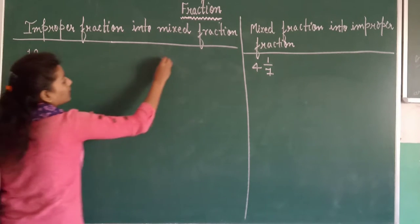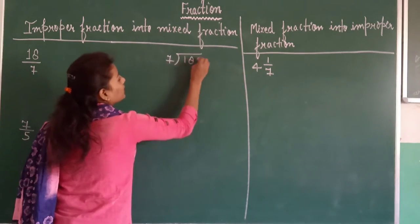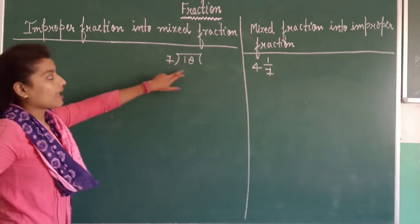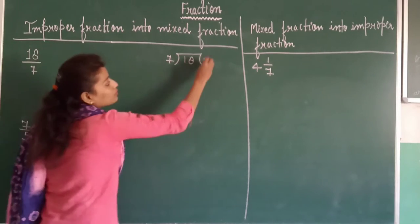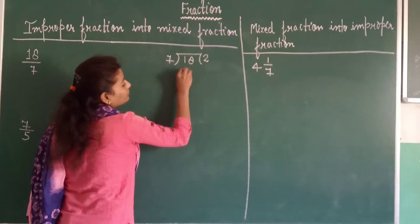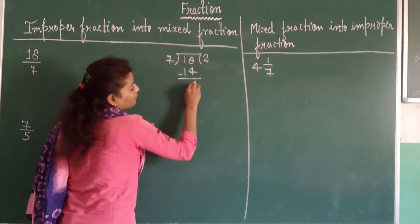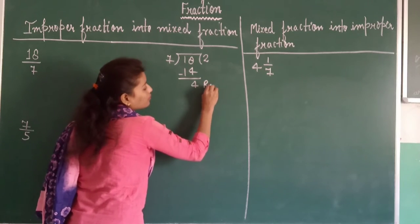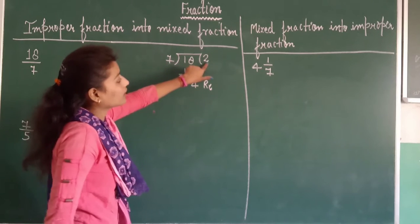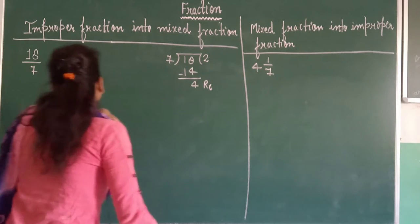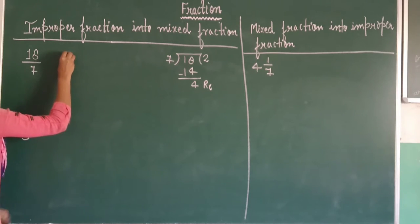Sabse pehle hum denominator se numerator ko divide karenge. For example, 18 upon 7 — humne divide kiya: 7 twos are 14, so quotient is 2 and remainder is 4. Yahan par aapka remainder zaroor bachega. Yeh hua remainder, yeh hua divisor, aur yeh hua quotient.